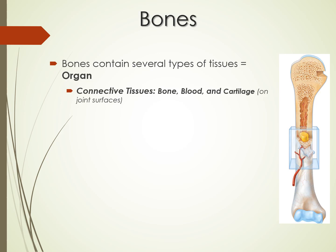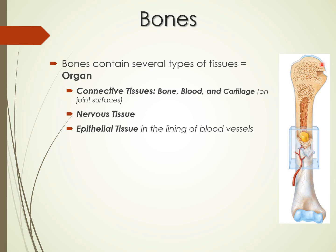Now let's get into bones. Bone tissue is a connective tissue, but a whole bone is an organ because it contains multiple tissue types — not only connective bone tissue, but also blood vessels, cartilage on joint surfaces, nerves innervating the periosteum, and epithelial tissue lining the blood vessels.